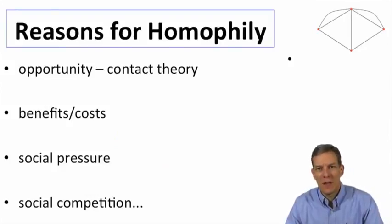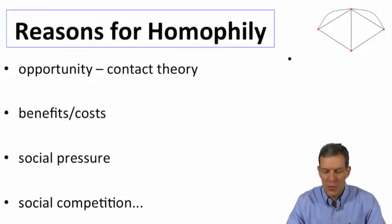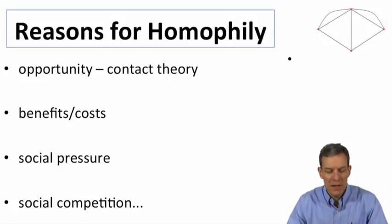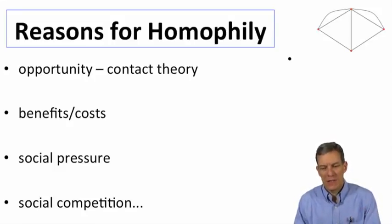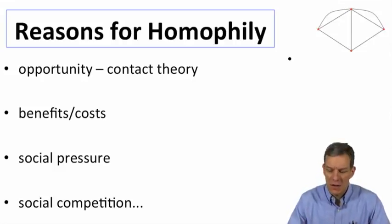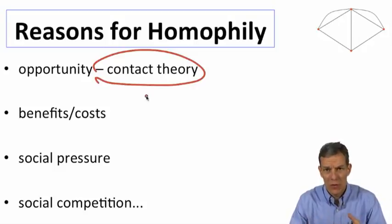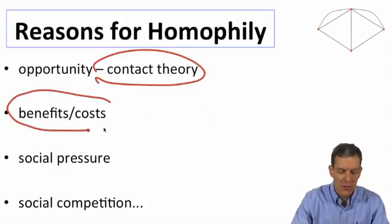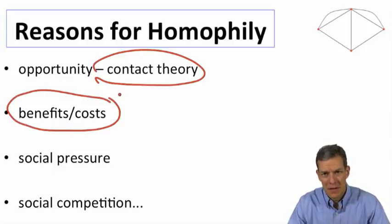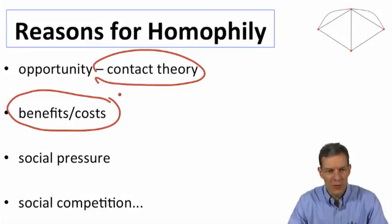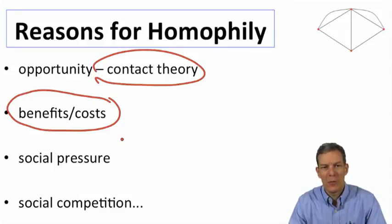There are many explanations for homophily. It could be opportunities — the way classes are structured may bias who you meet by race, giving you more chance of meeting your own type. It could be benefits and costs — having a common culture or common way of thinking makes interactions easier. There could also be social pressures or social competition involved. There's a whole series of different theories for why you might see homophily.